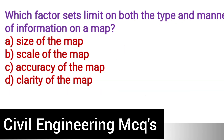Next question: Which factor sets limits on both the type and manner of information on the map? Option A: Size of the map. Option B: Scale of the map. Option C: Accuracy of the map. Option D: Clarity of the map. The correct answer is option B, scale of the map.